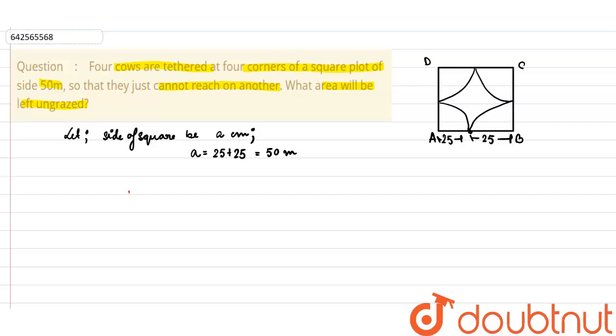Now what we will do is we know therefore the area of the square, the area of the square is equal to side square which means 50 square which is equal to 2500 meter square. Now we will find out the quadrant inside the square.